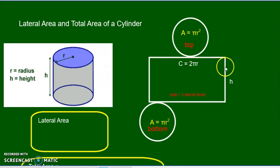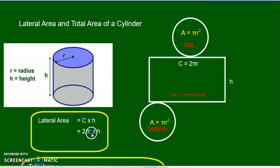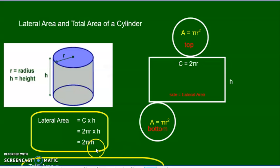So the circumference times the height gives you the lateral area. That's the formula: circumference times height, which is 2πr times the height. We don't need the multiplication symbol, so it's 2πrh. Multiply those four things together and that's your lateral area.